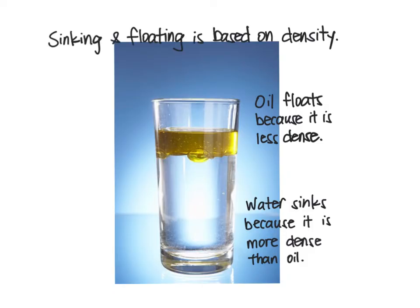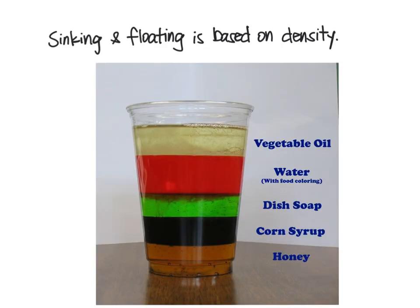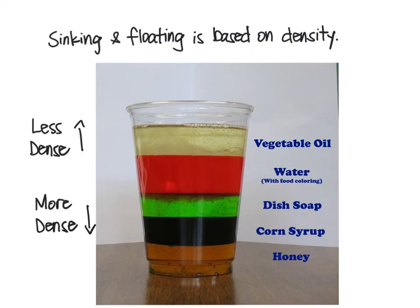When we think of things sinking and floating, we have to consider density. Less dense fluids will float on top of more dense fluids. If many fluids are mixed together, they will naturally layer themselves from less dense on top to more dense on the bottom.